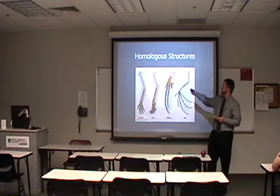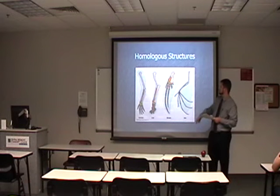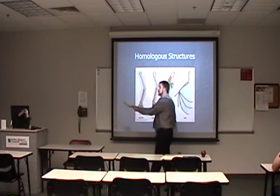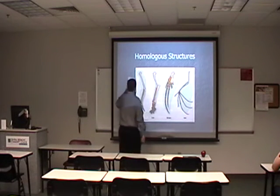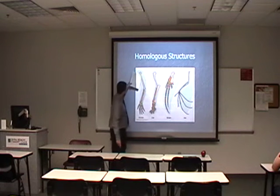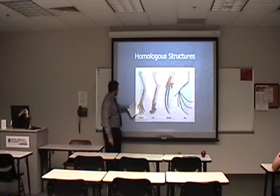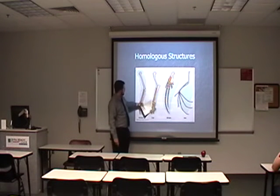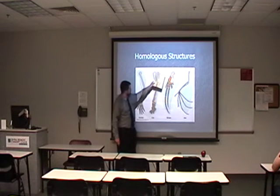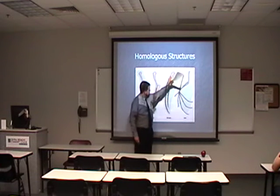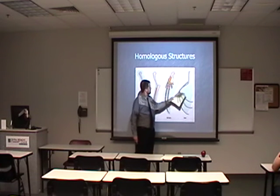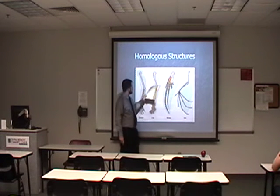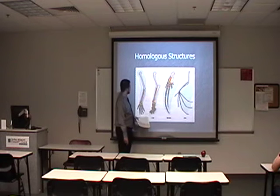Now we're going to talk about homologous structures. Here you see the human arm, the forepaw of a cat, the flipper of a whale, and the wing of a bat — and you see that there are five major bone groups.